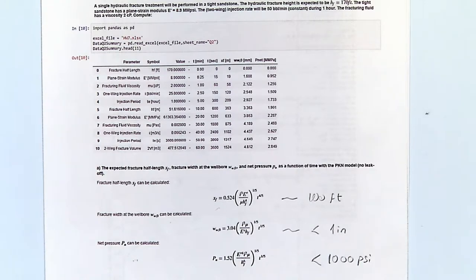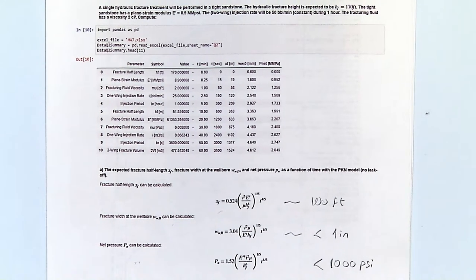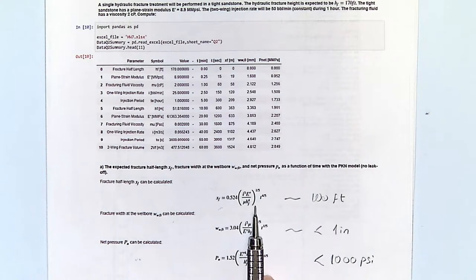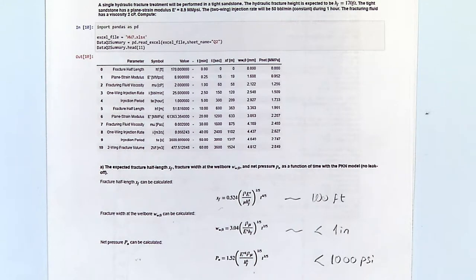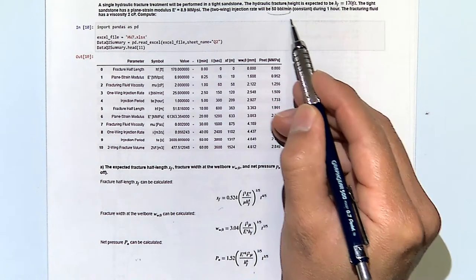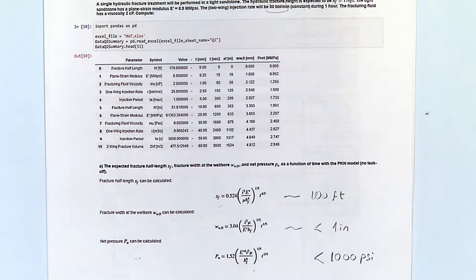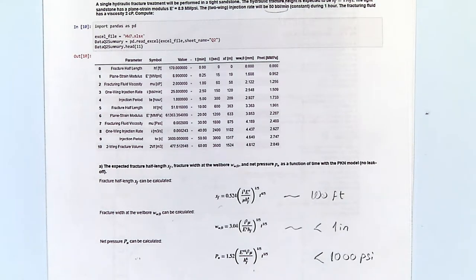In this problem you just apply the PKN equations. The only tricky step is dividing the injection rate by two — the total injection rate is for two wings, so the rate for one wing is half of that, say 25 units.